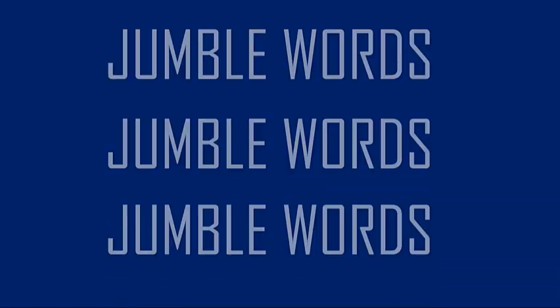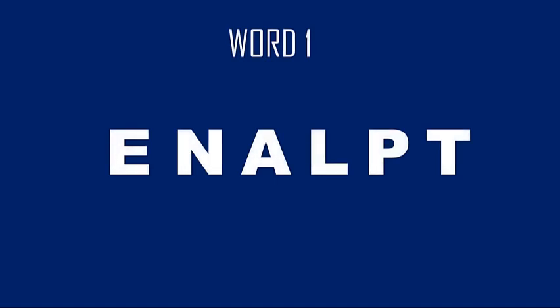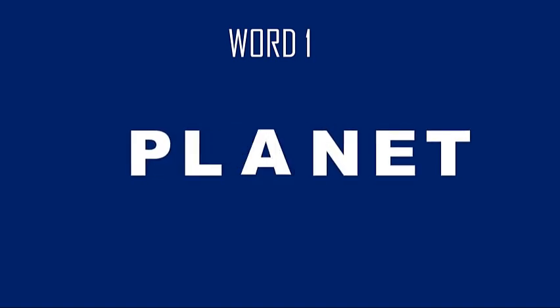Let's try this activity: Jumbo Words. In this activity, you need to rearrange the letters into the correct words. Are you ready? Let's start. Word 1 — what's your answer? It's 'planets.' Very good!